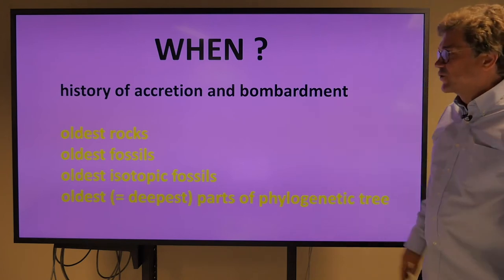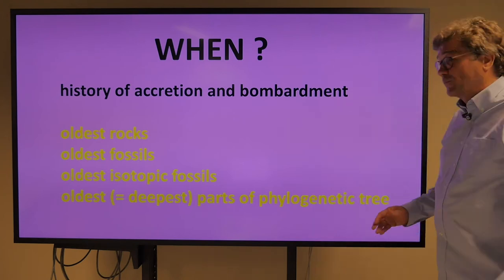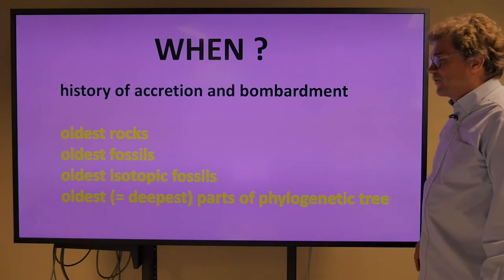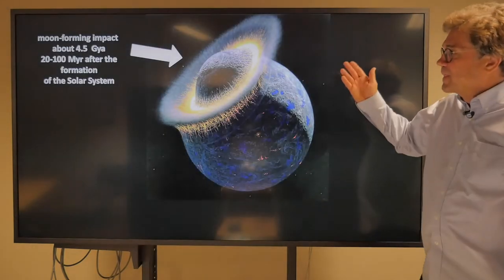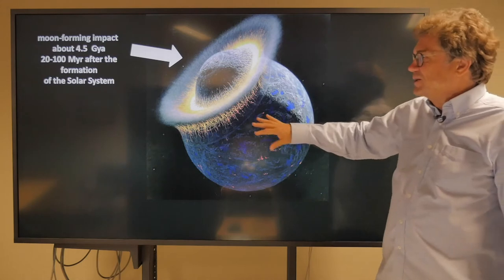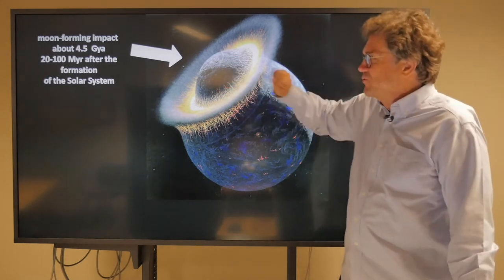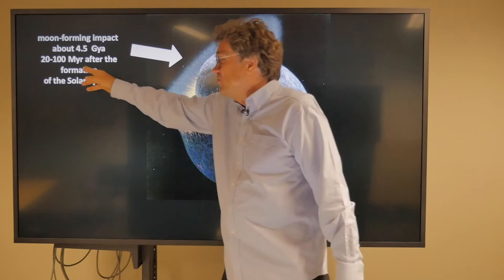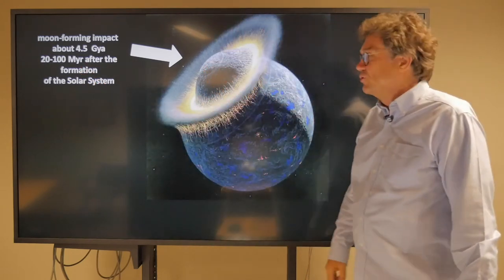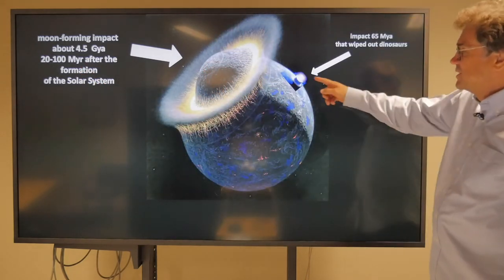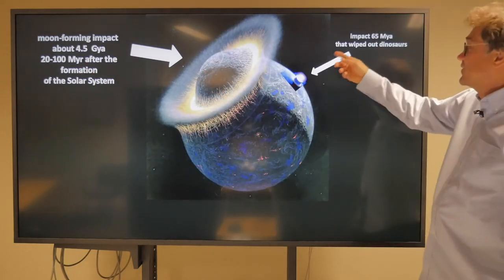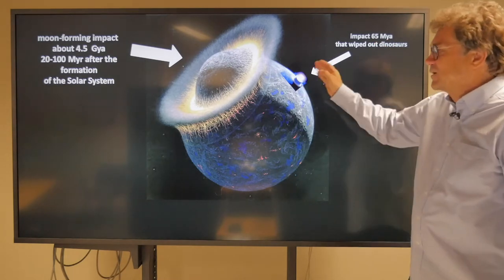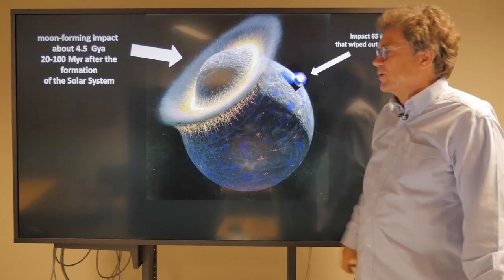First, the history of accretion and bombardment of the Earth — because if you're being bombarded, it's hard to have the origin of life. Here's the proto-Earth, and there was a giant moon-forming impact about 4.5 billion years ago, about 20 to 100 million years after the formation of the solar system. For comparison, the impact 65 million years ago that wiped out the dinosaurs was a tiny blip compared to that.